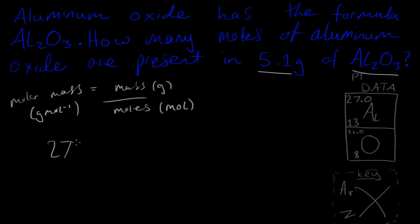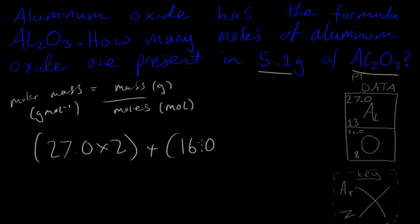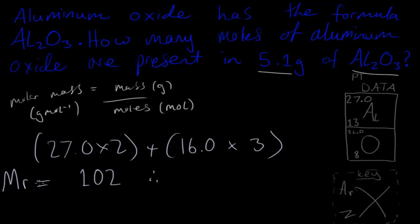We add that to the oxygen contribution: O₃ means there are 3 oxygen atoms, so we multiply 16.0 by 3. So the calculation is 27.0 × 2 plus 16.0 × 3, and that gives us 102. This is our relative formula mass.